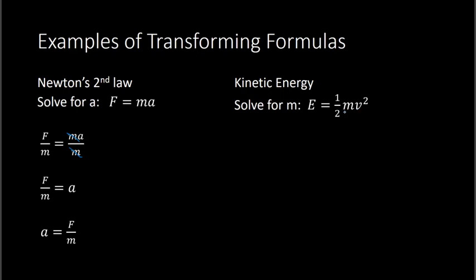Let's begin with the one-half. We have one-half being multiplied by m, so to get rid of the multiplication I do the opposite, which is dividing. I divide both sides by one-half, which is the same thing as multiplying by the reciprocal — that's the same as multiplying by two over one. So I multiply both sides by two. When I do that, two times one-half will cancel, and I have mv-squared on the right and two times E on the left.